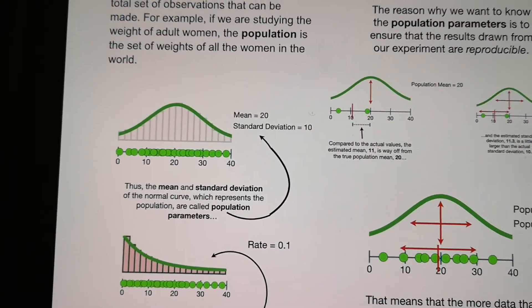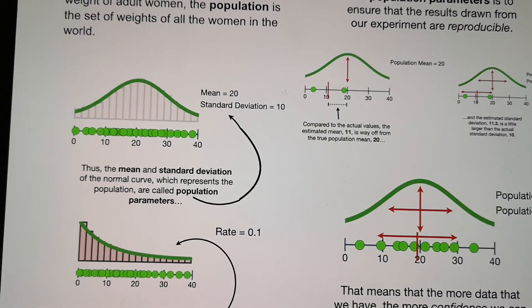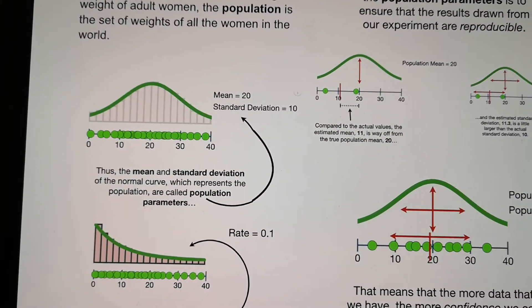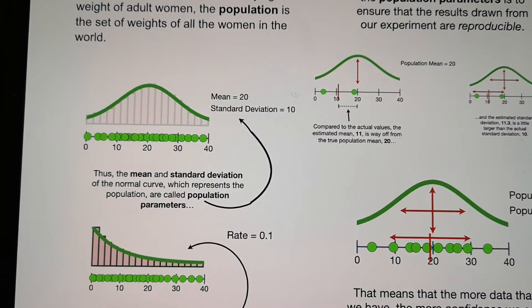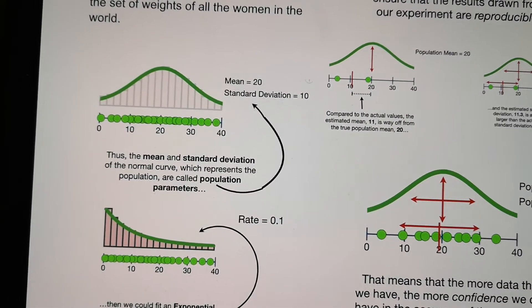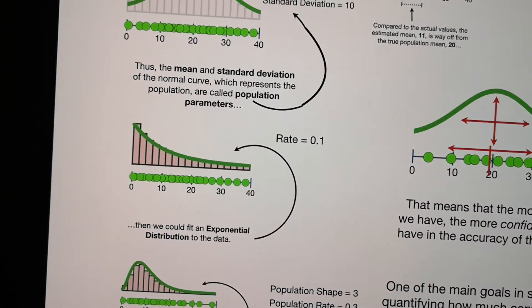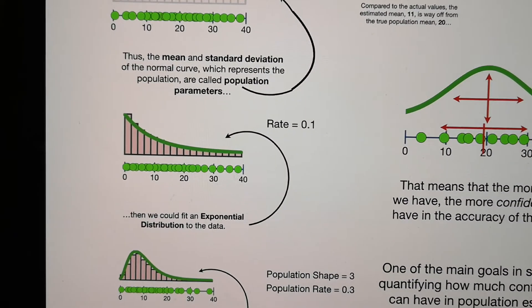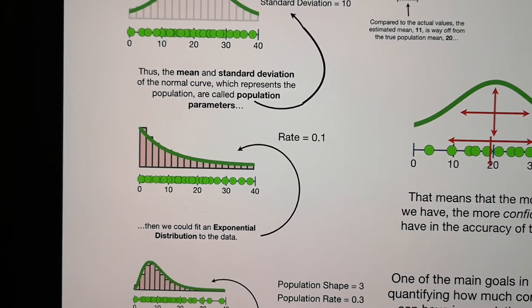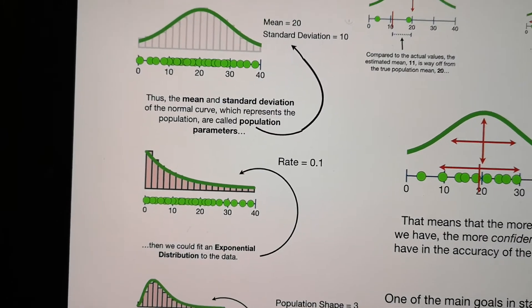For some kind of the population, they follow certain kind of distribution. For example, the first one is a normal distribution. You can see they need mean and standard deviation to define the curves. And another one is called exponential distribution. Some of the population may follow this kind of distribution. Then you need a rate to define the curve.